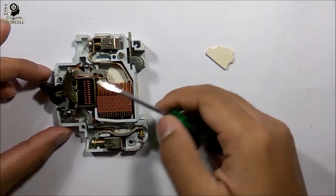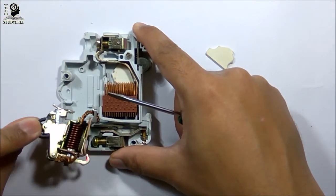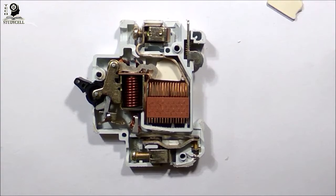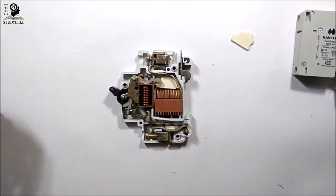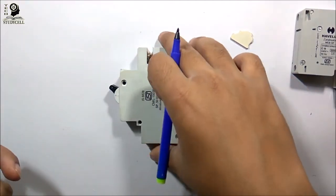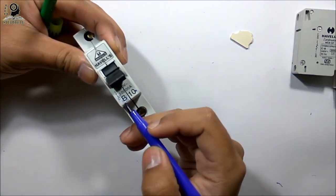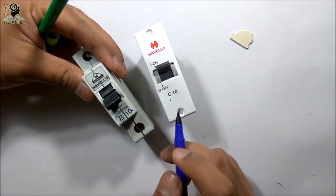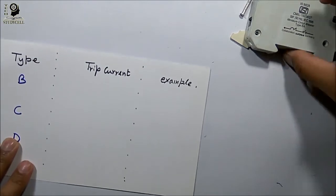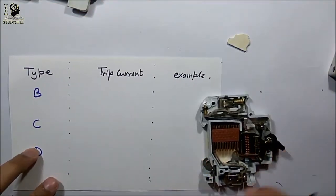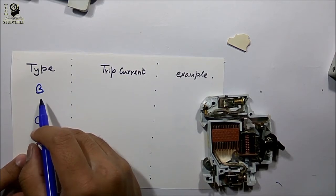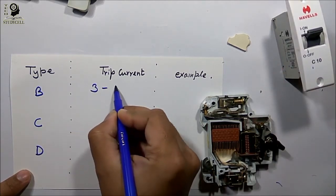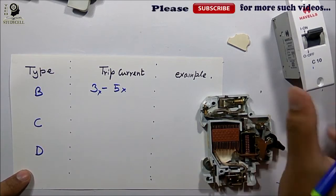Now I have discussed all the components of this circuit breaker and shown you all the parts of this MCB. Now we will discuss the different B, C, and D type circuit breakers. This is a B type circuit breaker as B is written on it; this is a C type circuit breaker. For B type circuit breaker, the tripping current will be 3 to 5 times higher than the rated current.